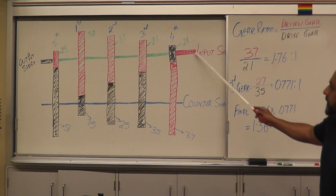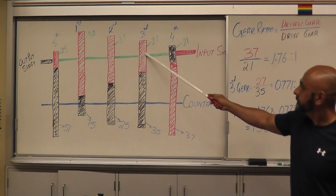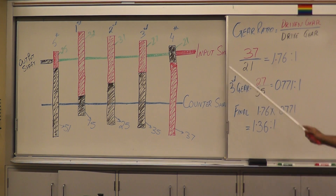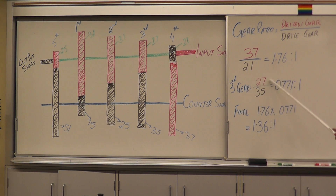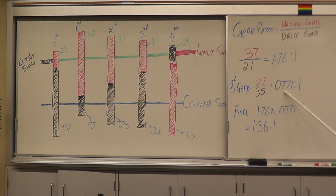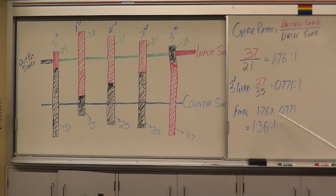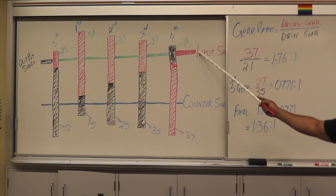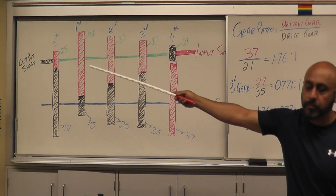Third gear — same process, coming in and out. The first gear set ratio stays the same at 1.76. For third gear, we have 27 over 35, which gives you 0.771 to 1. Multiply both gear ratios together and you get 1.36 to 1. That's your final input versus output shaft ratio — spinning at 1.36 RPMs, the output will only spin once.